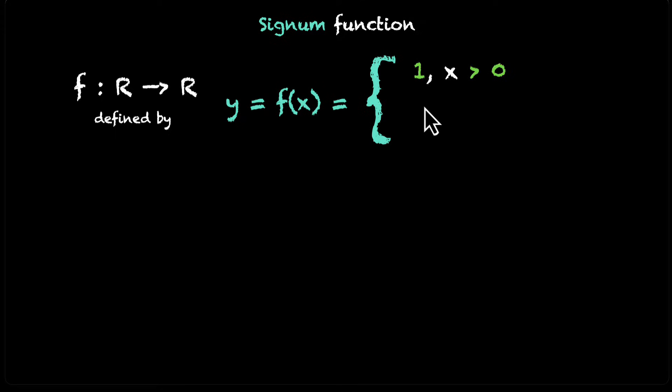So this is the definition. It gives you 1 for x greater than 0, it gives you 0 for x equal to 0, and it gives you minus 1 for x less than 0. So it has these three different values which you get for different values of x and x belongs to real numbers.